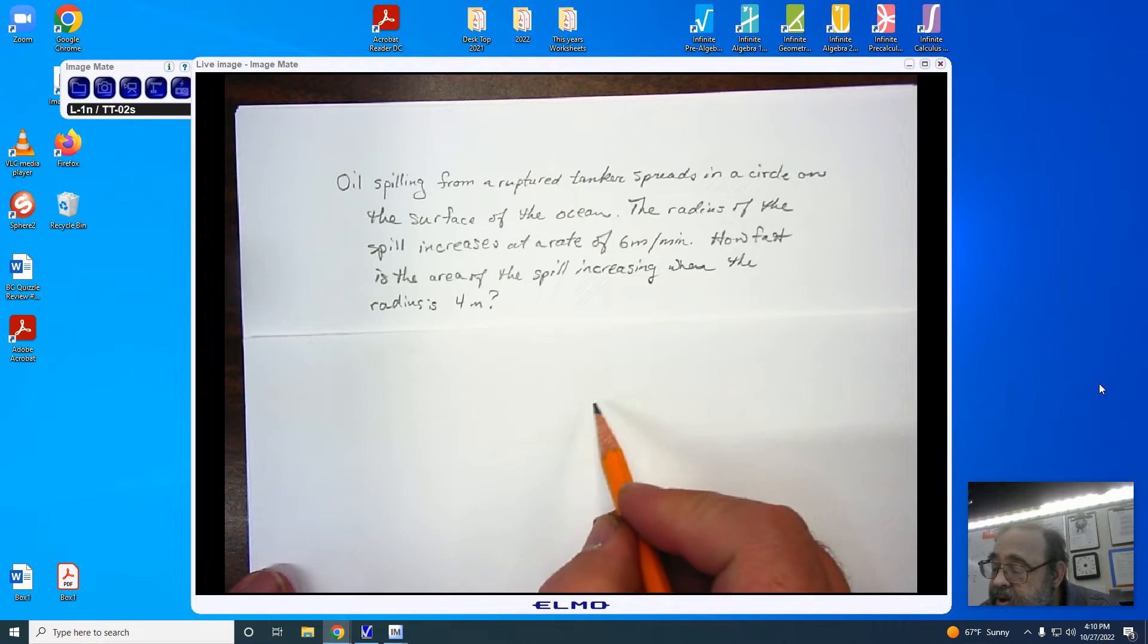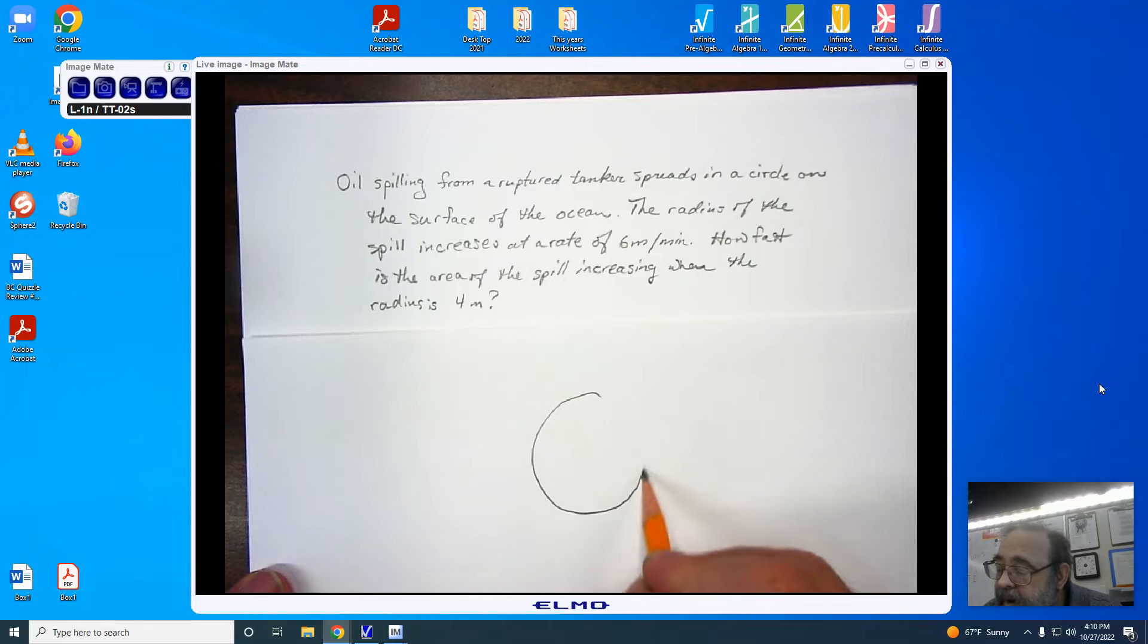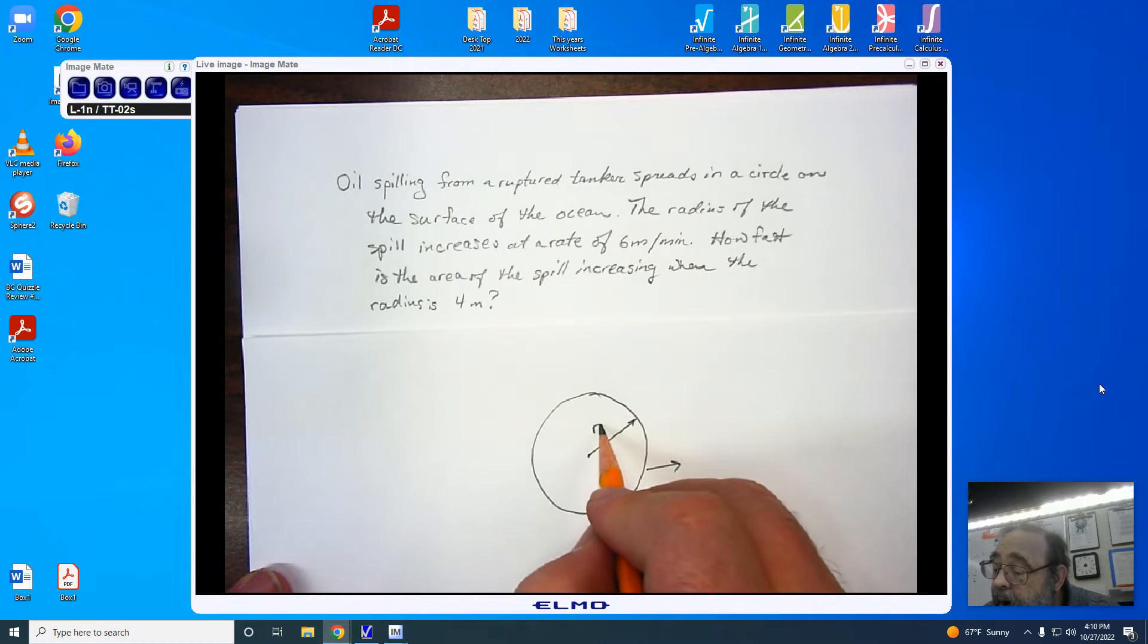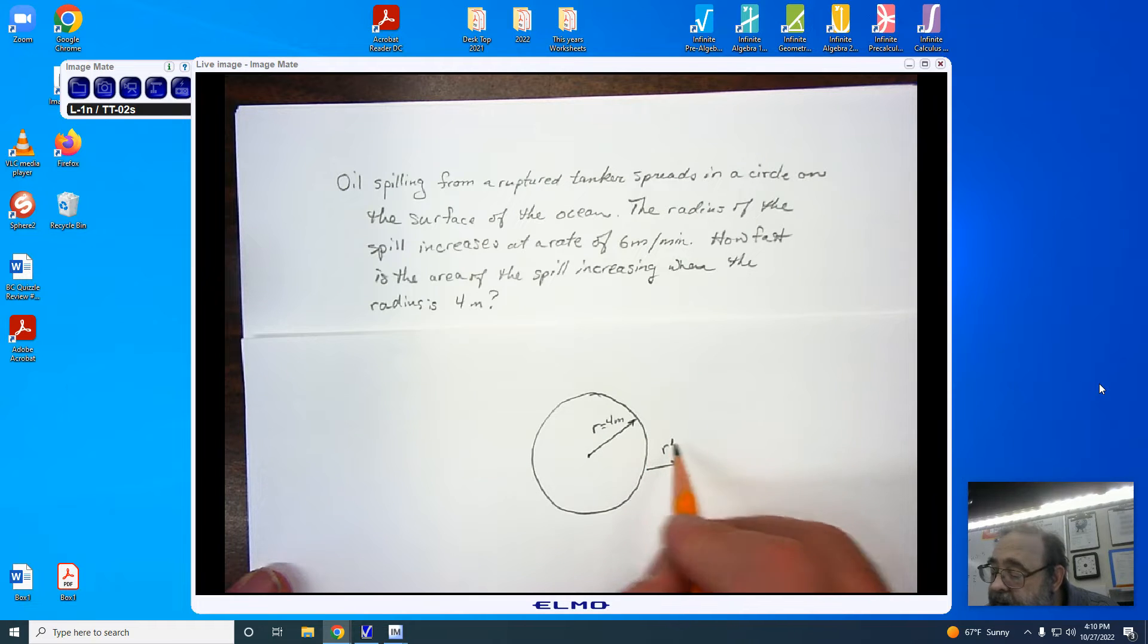Now, what I would recommend that you do is just draw a picture so that you can identify what's happening. We have a radius, and we have the radius expanding. We're going to write our r as 4 meters, and our r rate, our prime,